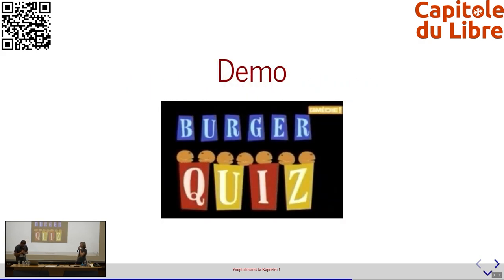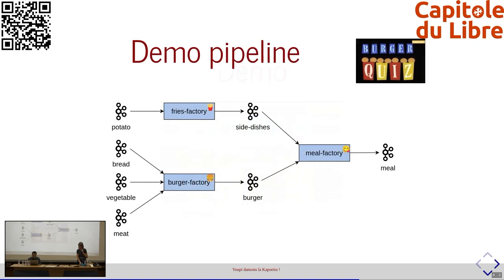Passons maintenant à la démo tant attendue — le Burger Quiz. C'est la thématique pour illustrer notre exemple de cas de Kafka Stream et de Capoeira. On a essayé de reproduire une petite pipeline de données illustrant une certaine complexité, thématisée autour des nuls et de la fête. On a plusieurs topics d'entrée et on va essayer de constituer un menu burger. On aura trois Kafka Streams : Fries Factory, Burger Factory et Meal Factory qui assemblera les deux.